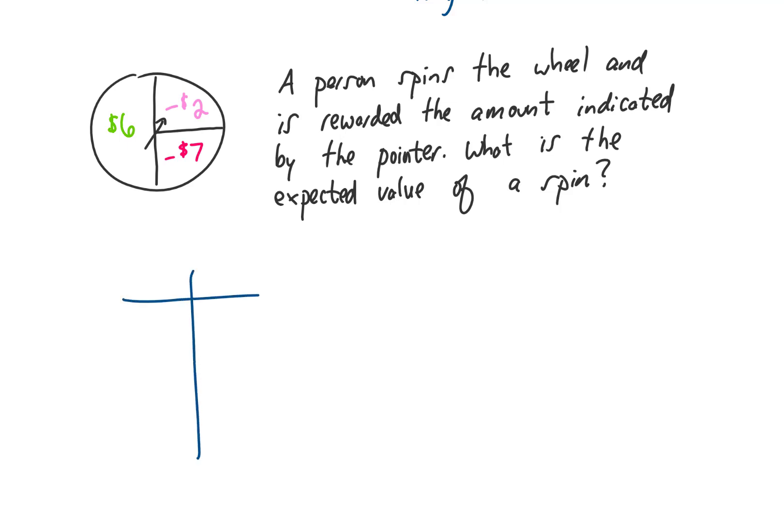Again, I think it makes sense to make a chart. We need two things in the chart. We need probability and we need how much we're winning or losing. So the idea from this drawing is that you should have a 50-50 chance to win $6. Because if this is a fair spinner, 50% of the spins will land on this $6 half of the pie. So we gain $6 one half of the time.